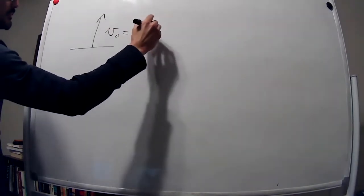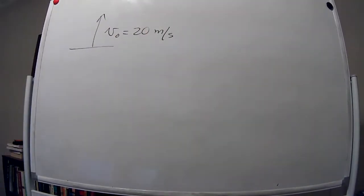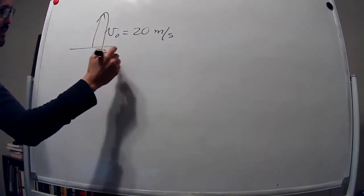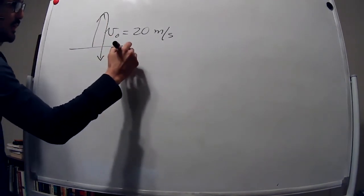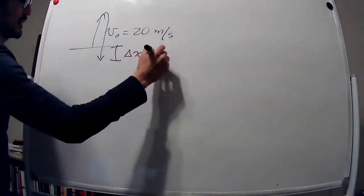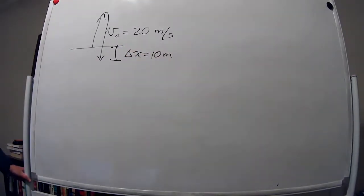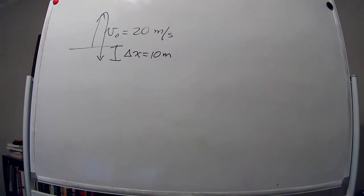A rock is tossed straight up from ground level with a speed of 20 meters per second. When it returns, it falls into a hole 10 meters deep. Part A: what is the rock's velocity as it hits the bottom of the hole?